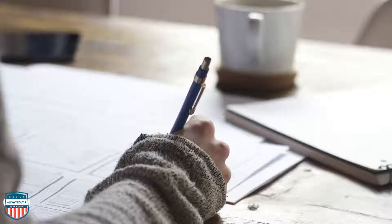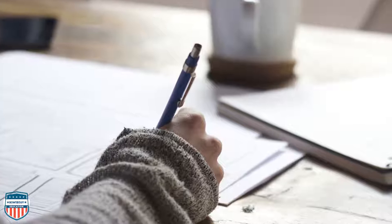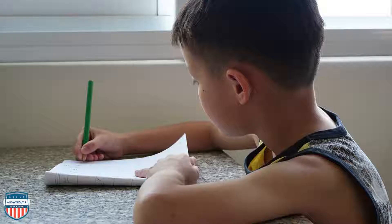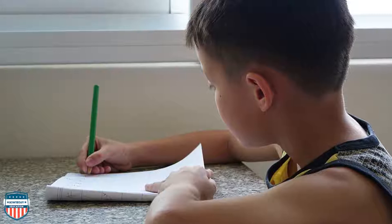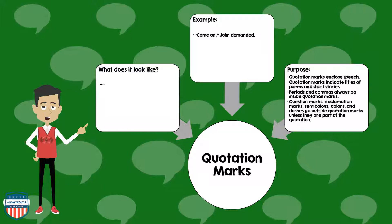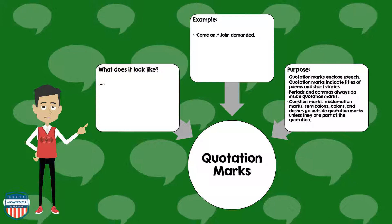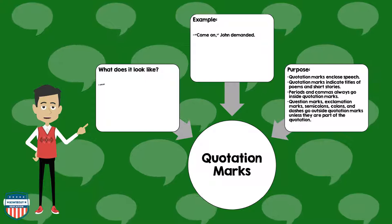Next, let's talk about quotation marks. What does it look like? It's a series of apostrophes that are lumped together. An example of quotation marks in use: "Come on," John demanded. The purpose of quotation marks: they enclose speech and indicate titles of poems and short stories. Periods and commas always go inside quotation marks. Question marks, exclamation marks, semicolons, colons, and dashes go outside quotation marks, unless they are part of the quotation.